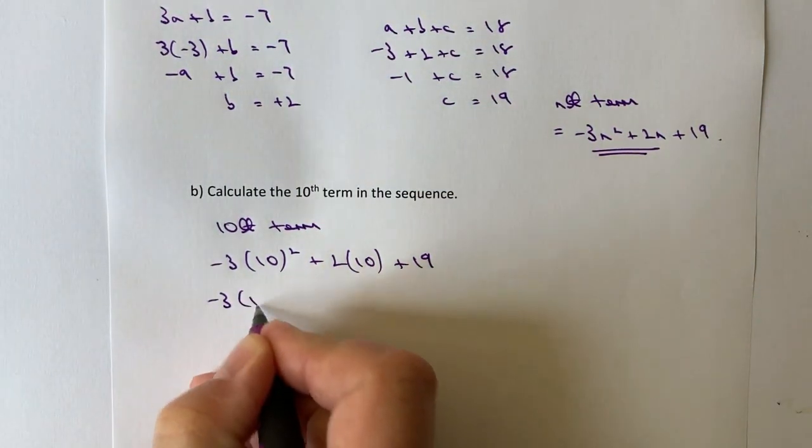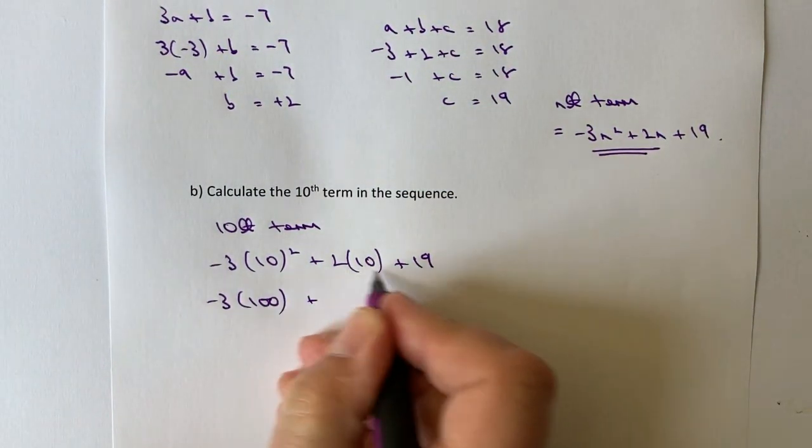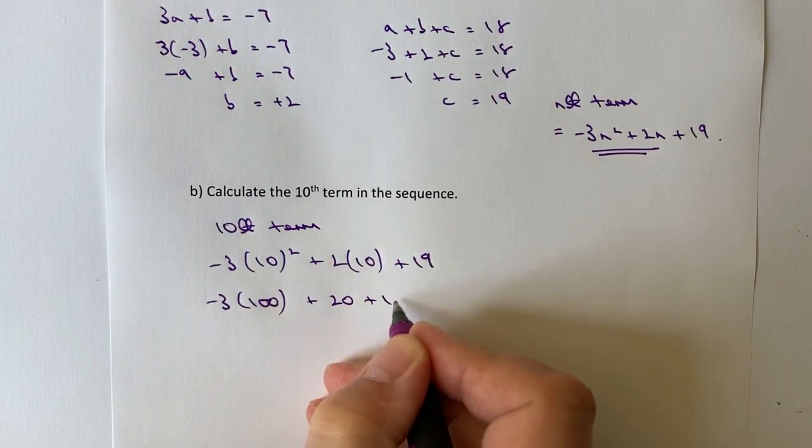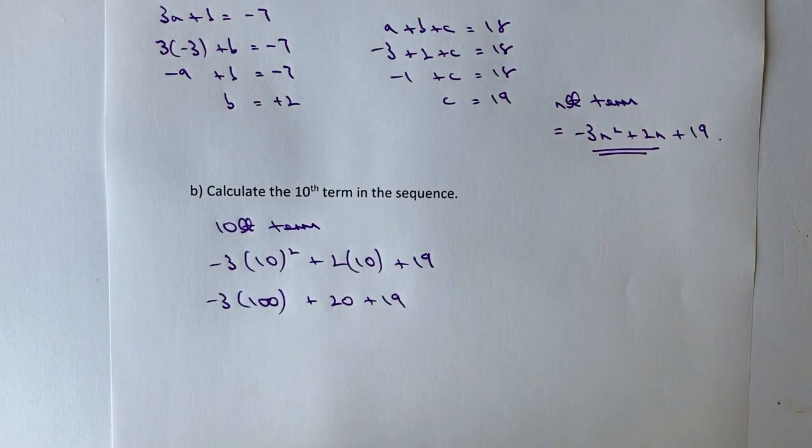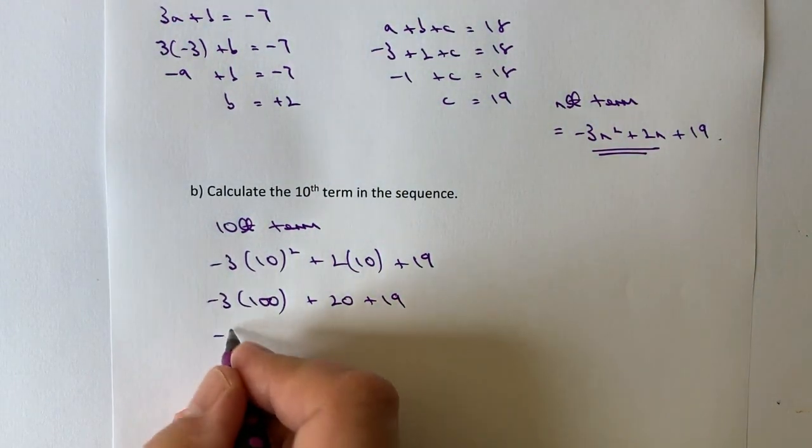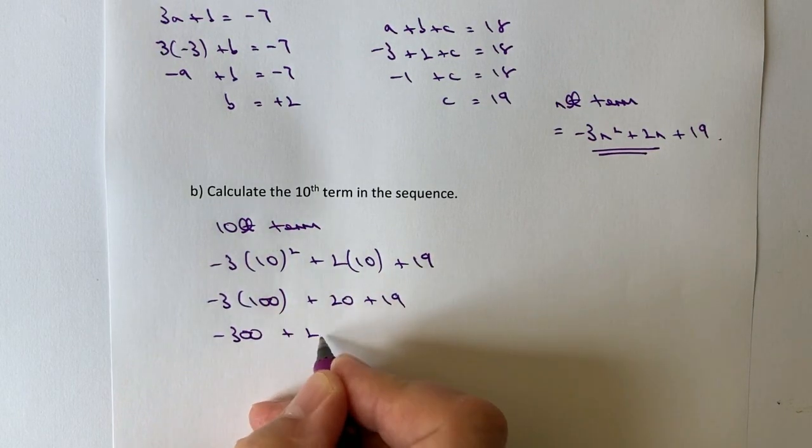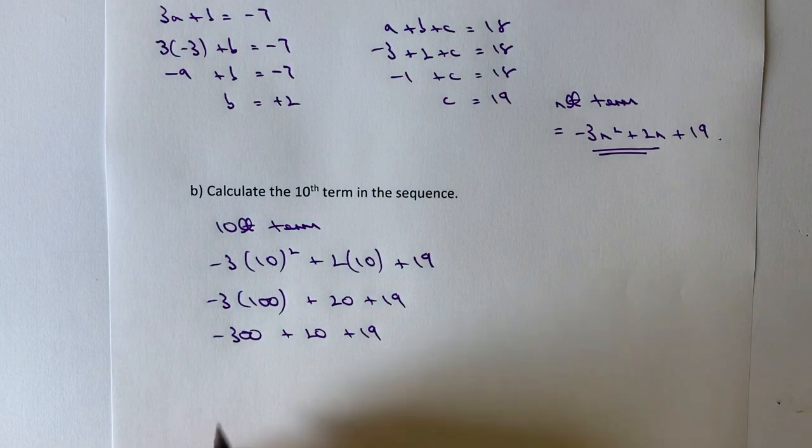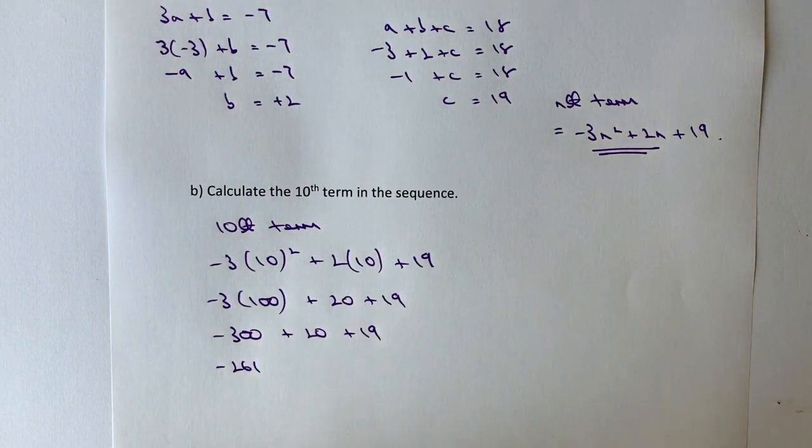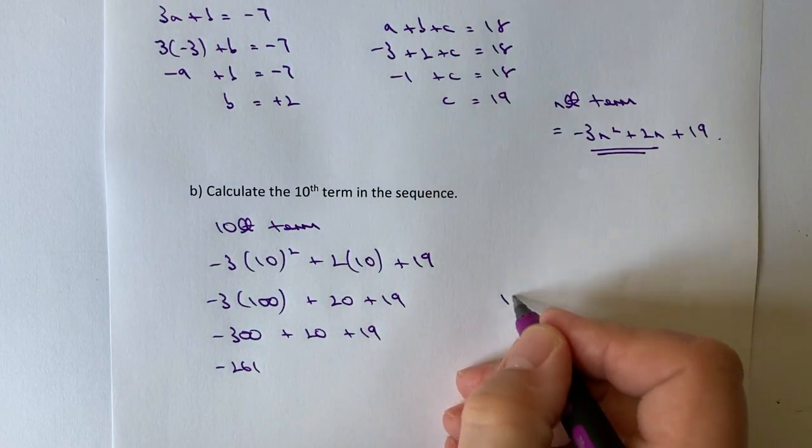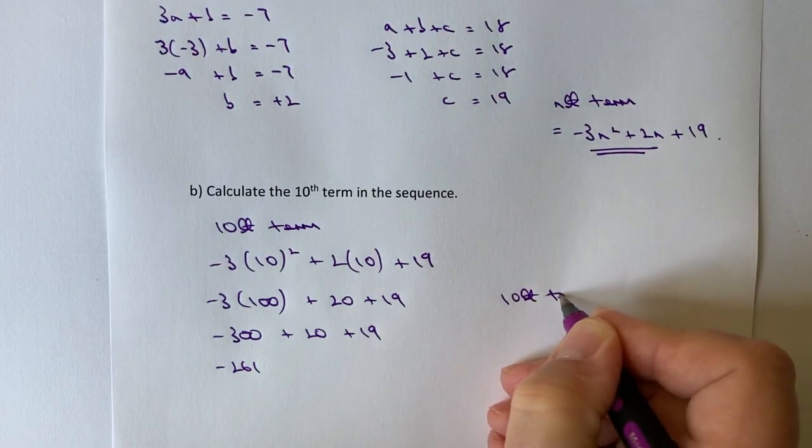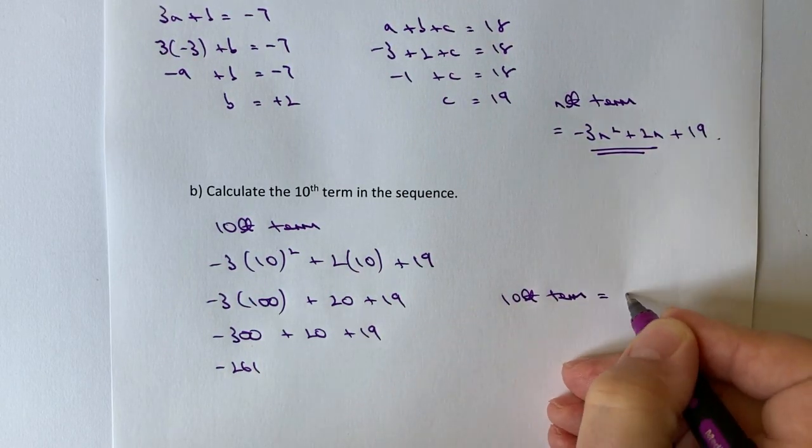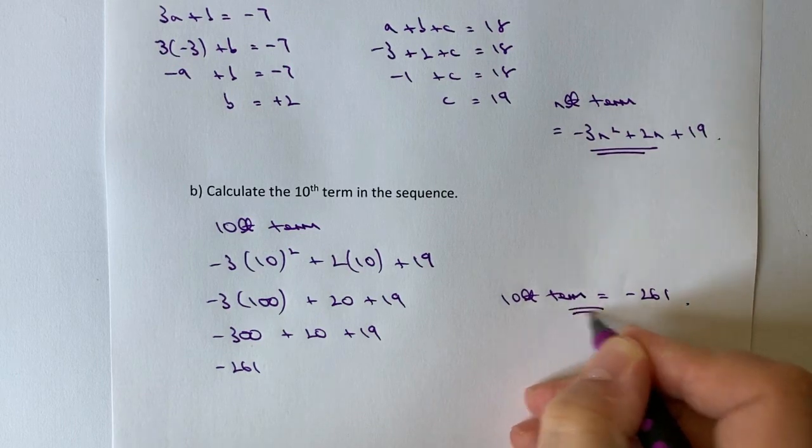So I've got minus 3 times 100 plus 20 plus 19. Well minus 3 times 100 is going to be minus 300 plus 20 plus 19, and if you calculate that out, you're going to get minus 261. So in this particular case, the 10th term is going to be minus 261, and that would answer that particular question.